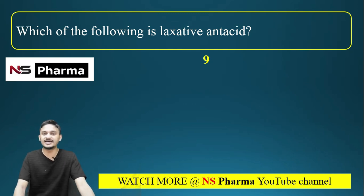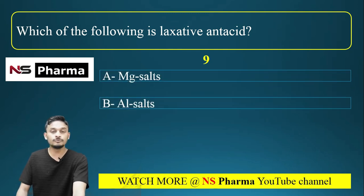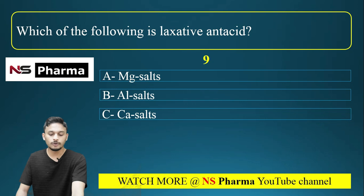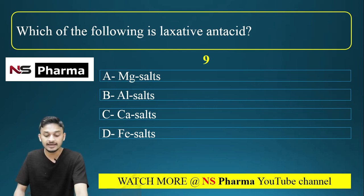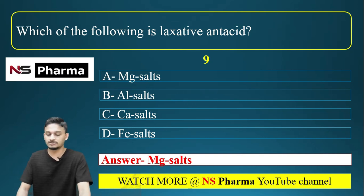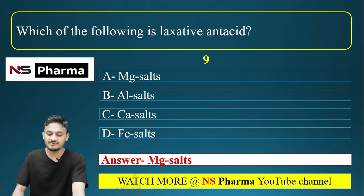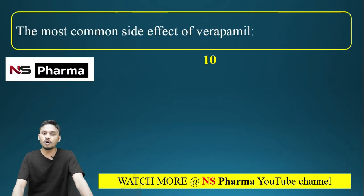Question number 9: Which of the following is a laxative antacid? Options are: option A, magnesium salts; option B, aluminum salts; option C, calcium salts; option D, iron salts. The correct answer is option A, magnesium salts. Aluminum salts cause constipation, whereas magnesium salts cause a laxative effect.